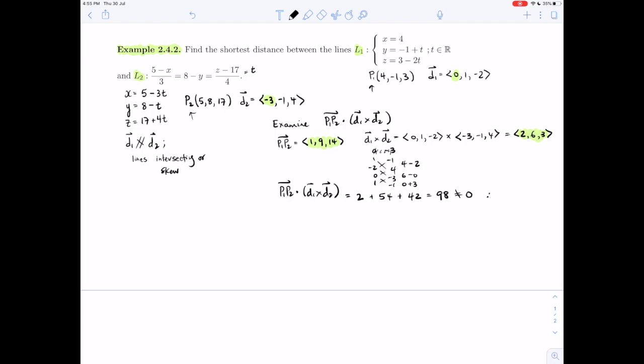And if the lines are skew, well, we know which formula to use. Then the distance between skew lines is the absolute value of the triple scalar product. Well, that's kind of handy, we've already calculated it. D1 cross D2 divided by the magnitude of the cross product.